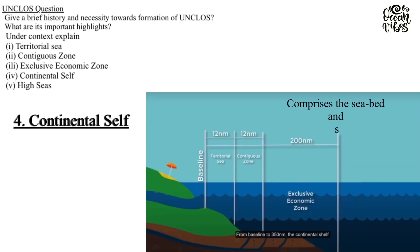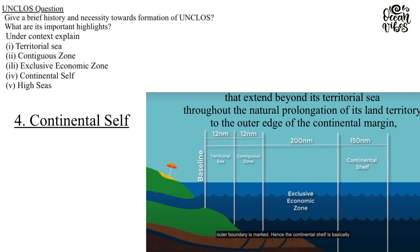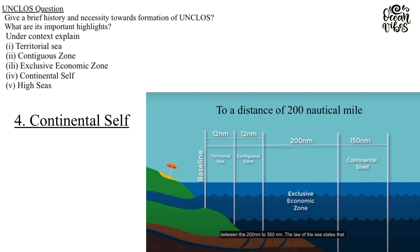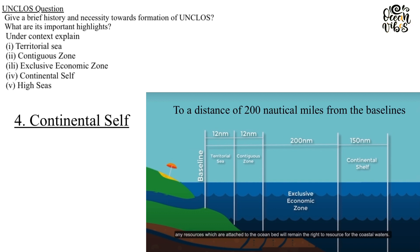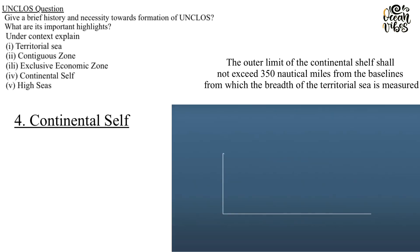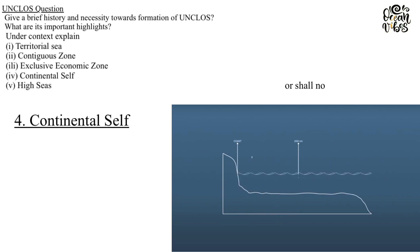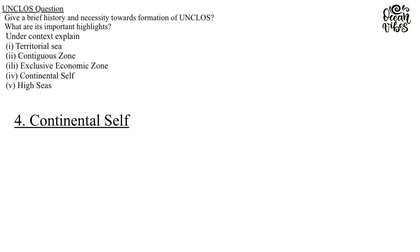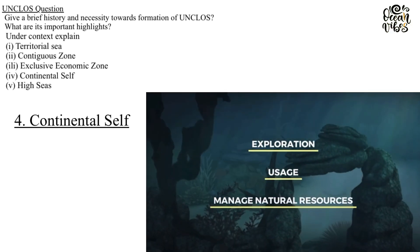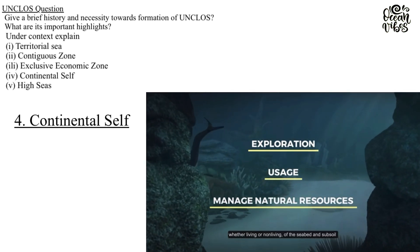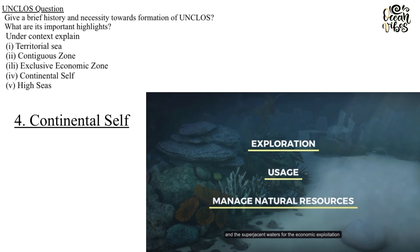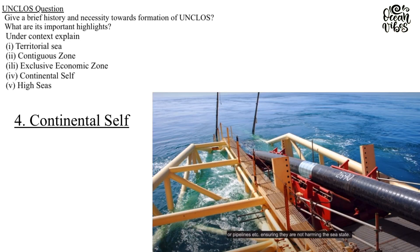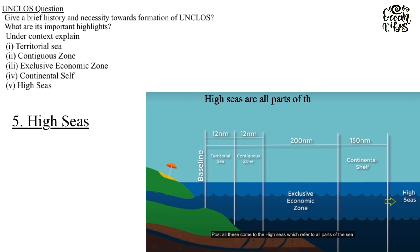Continental Shelf: The continental shelf of a coastal state comprises the seabed and subsoil of submarine areas that extend beyond its territorial sea throughout the natural prolongation of its land territory to the outer edge of the continental margin, or to a distance of 200 nautical miles from the baselines where the outer edge of the continental margin does not extend that far. The outer limit of the continental shelf shall not exceed 350 nautical miles from the baselines, or shall not exceed 100 nautical miles from the 2,500-meter isobath — a line connecting the depth of 2,500 meters. The coastal state exercises sovereign rights over the continental shelf for exploring and exploiting its natural resources, has the exclusive right to authorize and regulate drilling on the continental shelf for all purposes, and all states are entitled to lay submarine cables and pipelines on the continental shelf.